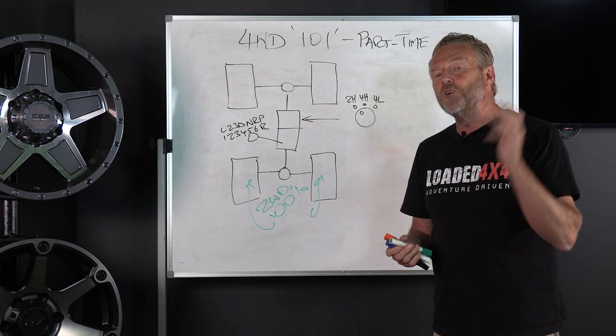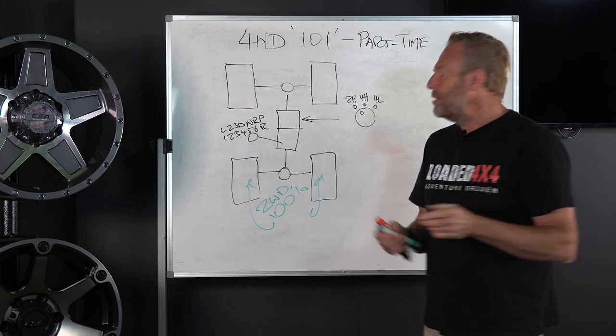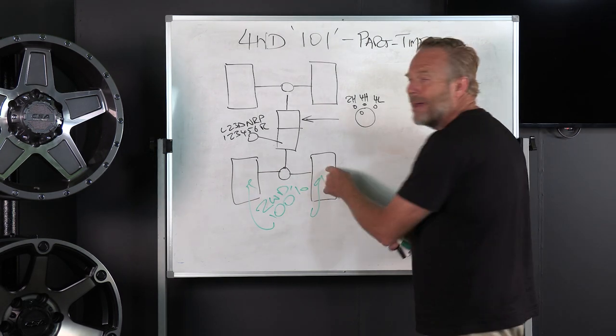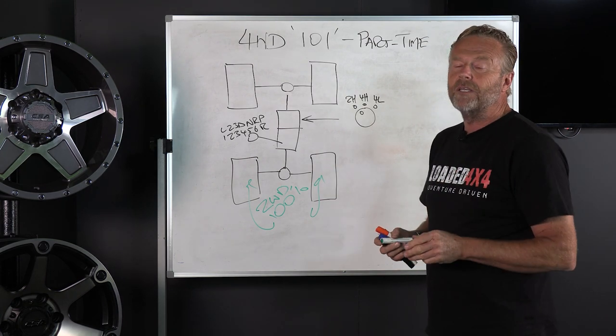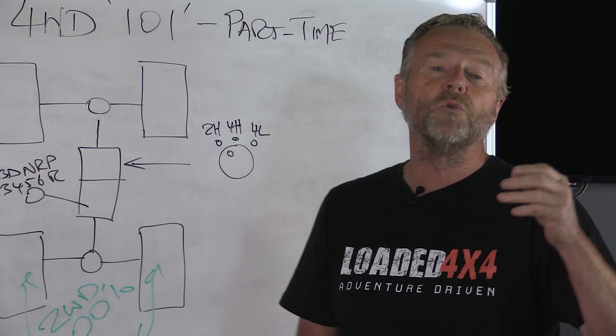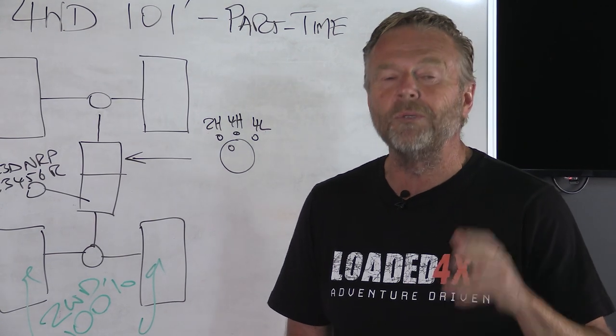But if we stray onto a dirt road it's different because with all the energy exiting the back, it's like a big old pendulum and it's very easy to kick the back end out. That's what causes crashes on dirt roads.